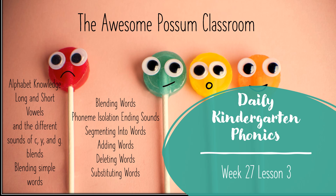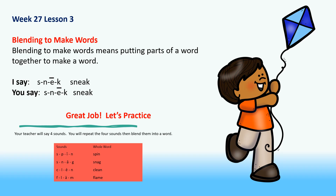Welcome back to the Awesome Possible Classroom. This is week 27, lesson 3 of your daily kindergarten phonics. Blending to make words.